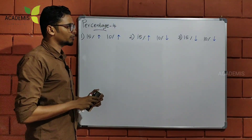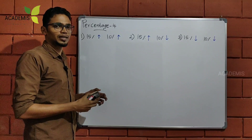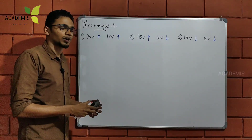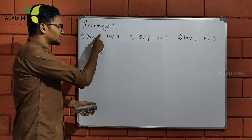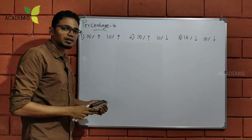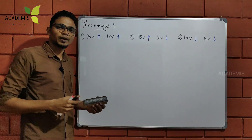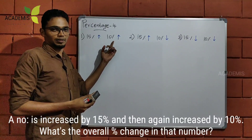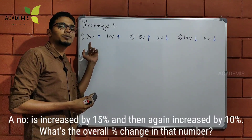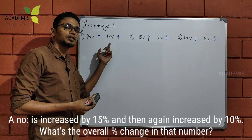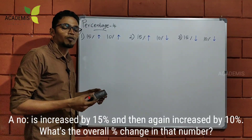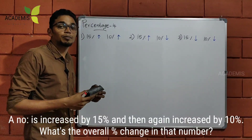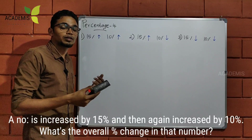I already asked three questions. There are a lot of questions. So we will solve this. Now, I will try to solve this. This is the percentage. This number has been increased by 15% and then again increased by 10%. What is the overall change in that number? What is the overall percentage?